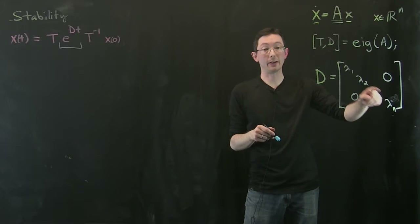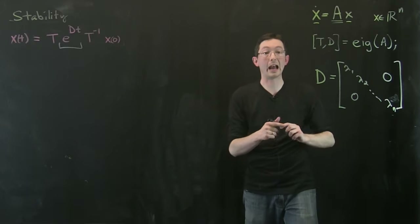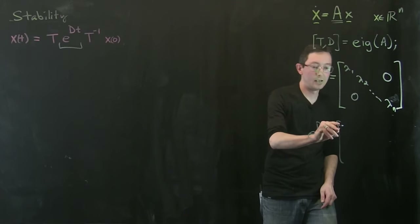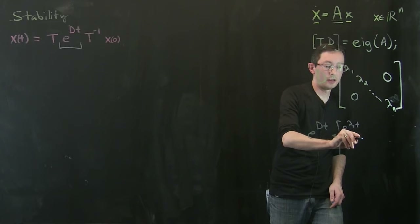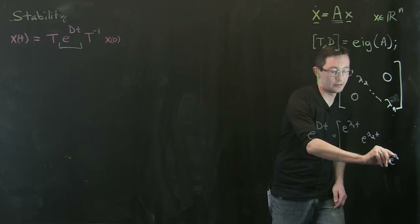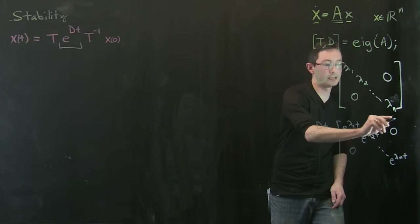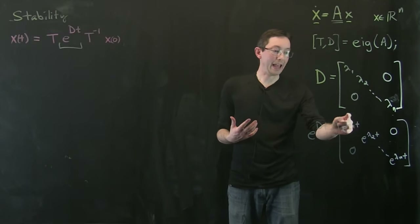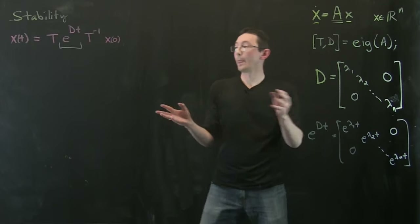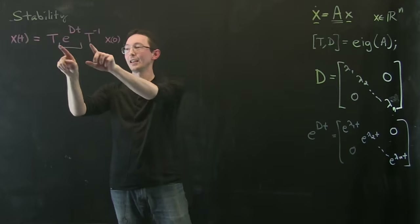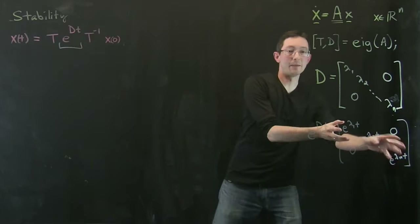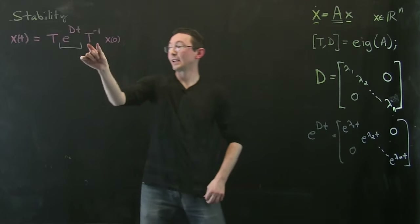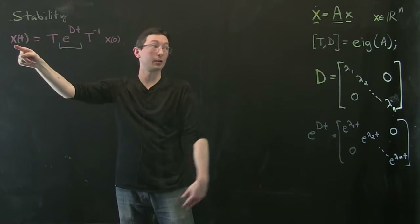What's nice about the diagonal matrix of eigenvalues D is that e^(Dt) is easy to write: it's just e^(λ₁t), e^(λ₂t), ..., e^(λₙt) on the diagonals and zeros everywhere else. The eigenvectors T and T-inverse act almost like taking a mixture of these different basic frequencies or time dynamics — each e^(λ₁t), e^(λ₂t), ..., e^(λₙt) — and mixing them to get the dynamics of the original state x.